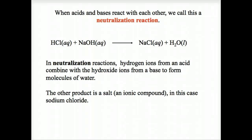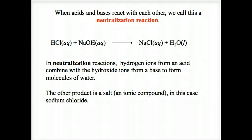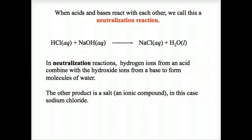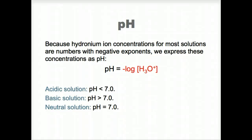A neutralization reaction between a strong acid and a strong base usually produces water, depending on what the acid and the base are. The product of a hydronium ion and a hydroxide ion in an aqueous solution is equal to 1 times 10 to the minus 14.